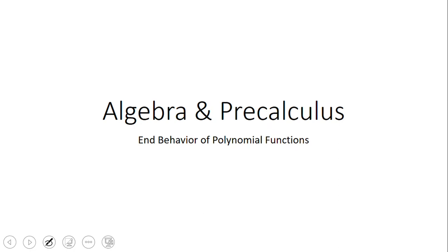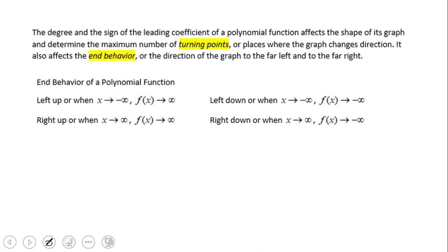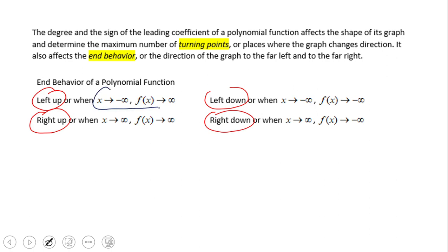Welcome or welcome back on C-Squared. In this video clip we're going to talk about end behavior of polynomial functions. First of all, let's take a look at a couple of things. We have four types: left up, left down, right up, right down.